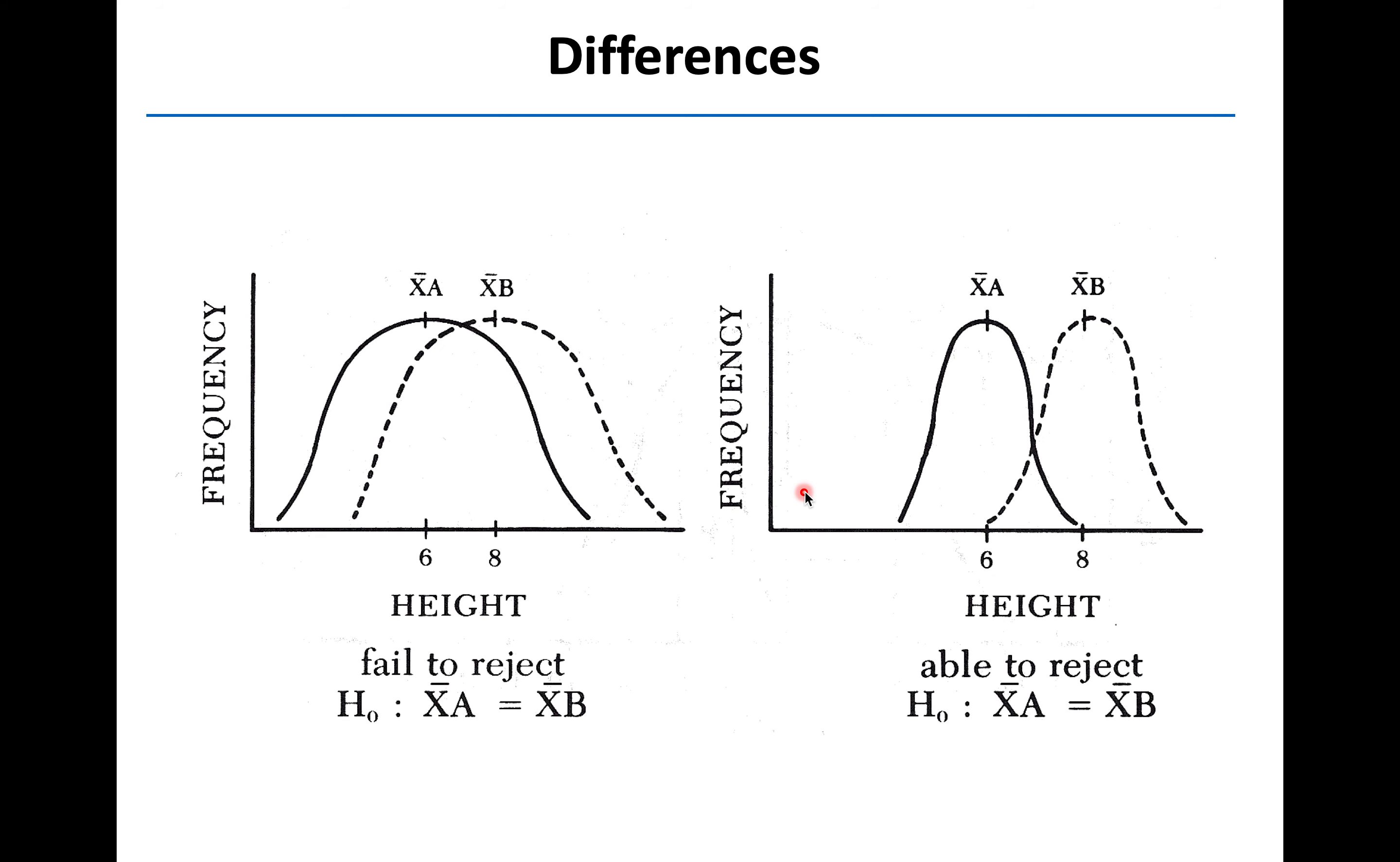Here would be two examples of data sets. We've got one on the left where the mean height of plants in group A and B is pretty similar. But in this graph on the left, we have very large variances. So there's a lot of overlap between the height of plants in those two groups. And so in this case, we really can't reject the null hypothesis. We can't really say there's any significant difference between those two groups.